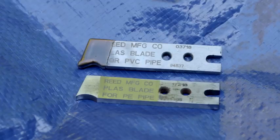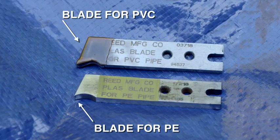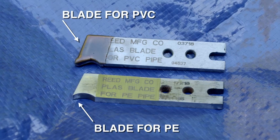There are two different blades for the PLAS cutter, a blade for PE and a blade for PVC.